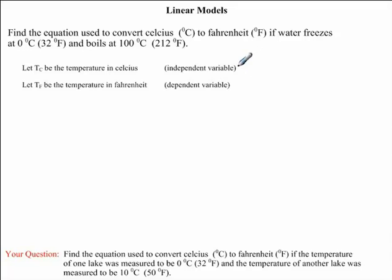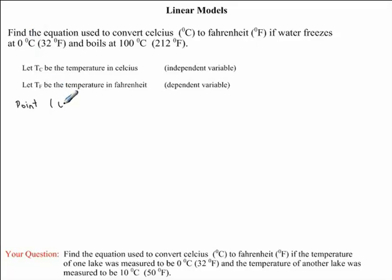When our independent variable is equal to 0, we know that our dependent variable is equal to 32, so this actually creates a point. Usually we have our x variable here, which is our independent variable — in our case it will be 0. And this is usually our y variable, or our dependent variable — in our case it is our temperature in Fahrenheit, which is 32 degrees Fahrenheit.